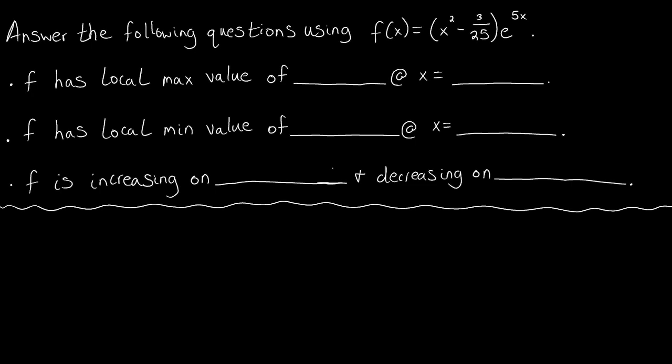In this video, we're going to look at another example of using the derivative to give us characteristics of the original function. This is the function we're dealing with, f of x equals this expression, and we're going to answer the same questions as in the first video for this section. All of this information comes from the first derivative, but we need to focus on the critical points first.